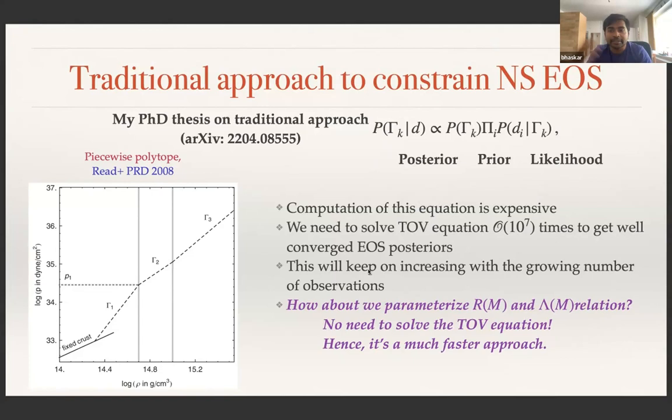In this work, we propose another way: instead of parameterizing the equation of state, we parameterize the macroscopic properties of the neutron star—such as the radius and tidal deformability as a function of mass. Since we are parameterizing the macroscopic properties directly, we don't need to solve the TOV equation, making this a much faster approach compared to the traditional method.